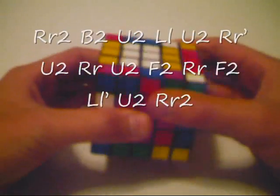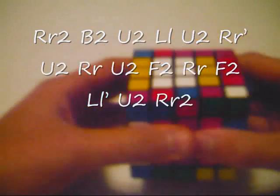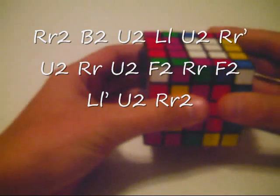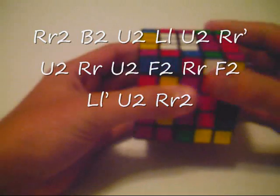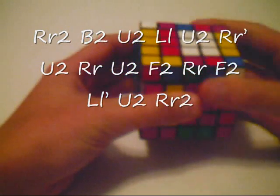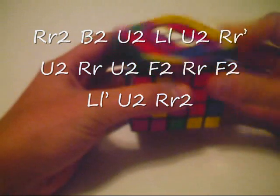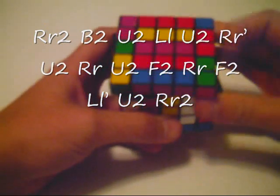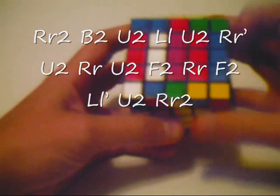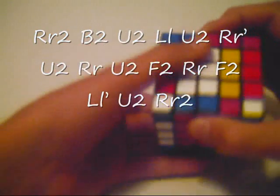Double right 2. B2, back twice. U2. L double L. U2. And double R inverted. U2. R double R. U2. F2. Double F inverted. V2.